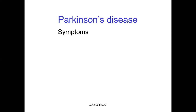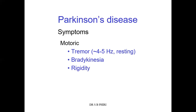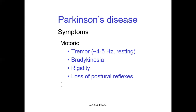So these are some of the clinical signs you're going to appreciate. The motor clinical signs include tremor, bradykinesia, rigidity, and loss of postural reflexes. Sometimes there's also depression and loss of memory, which is called dementia. These are the clinical signs of Parkinson's disease, which you can understand by looking at the function of the basal ganglia with regards to the input coming from the substantia nigra pars compacta.